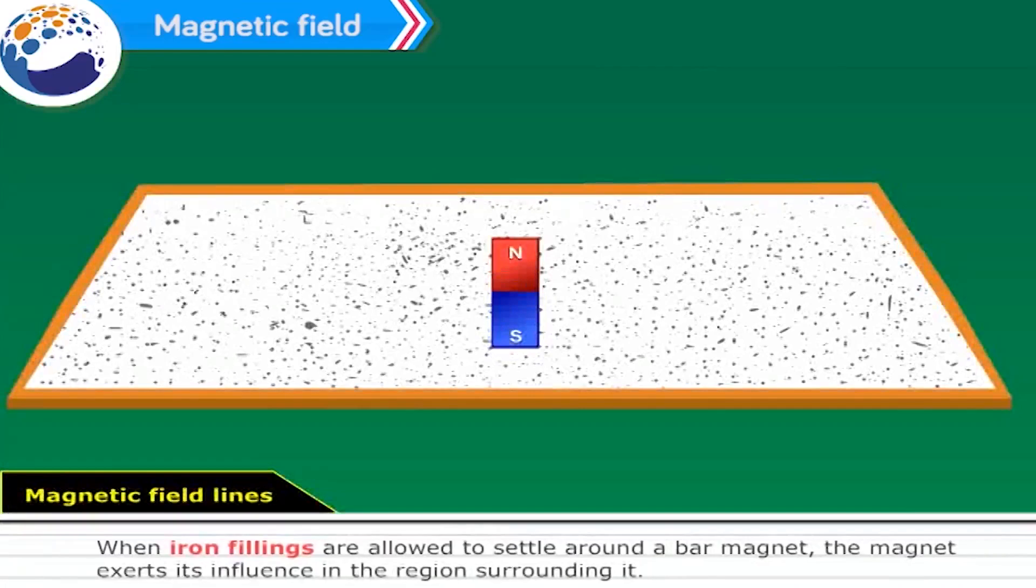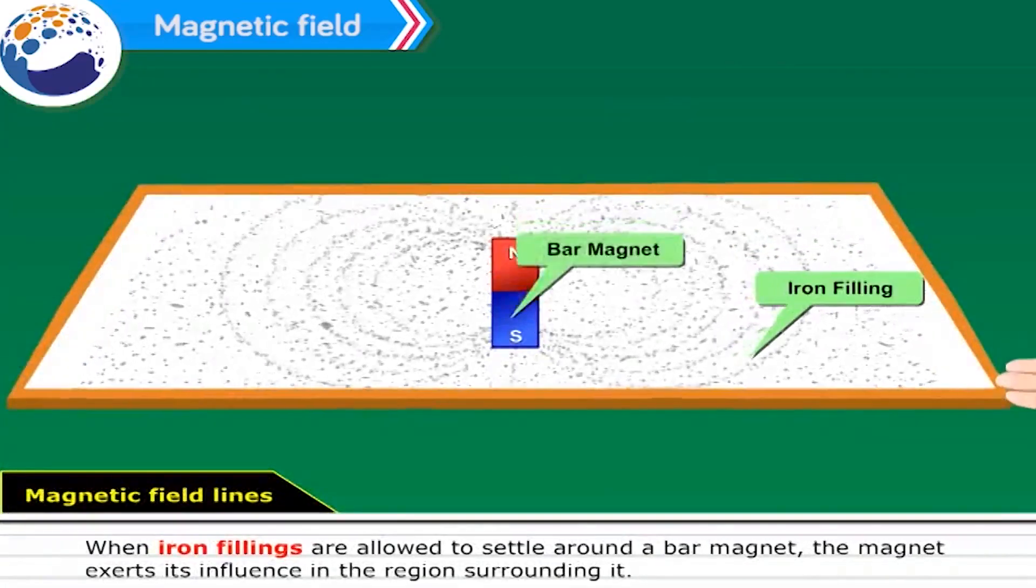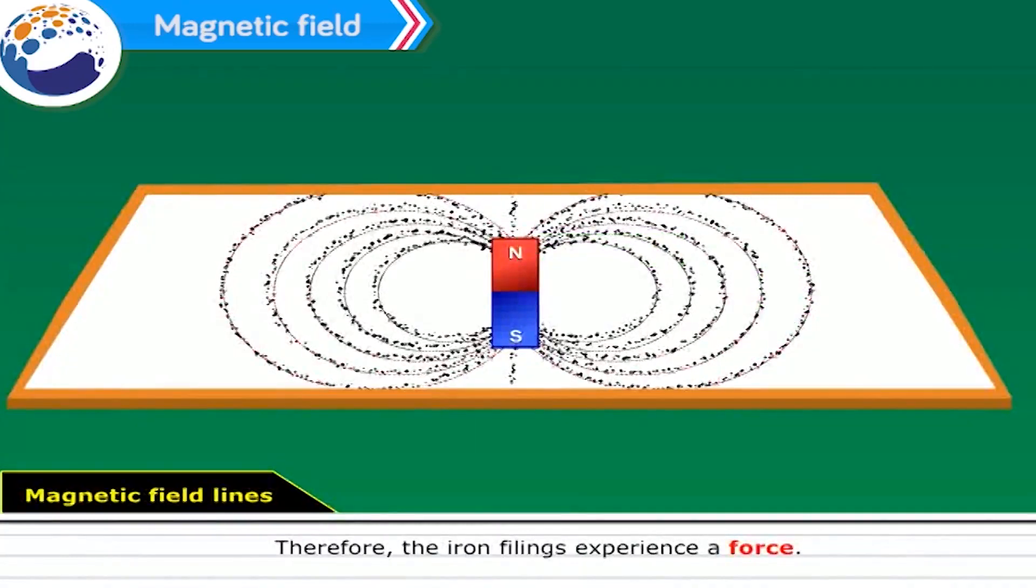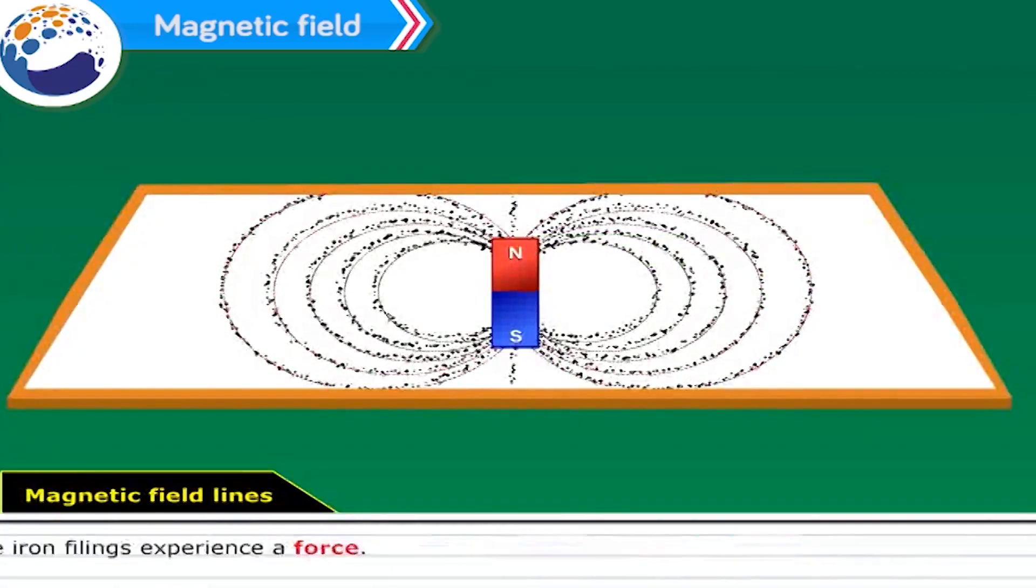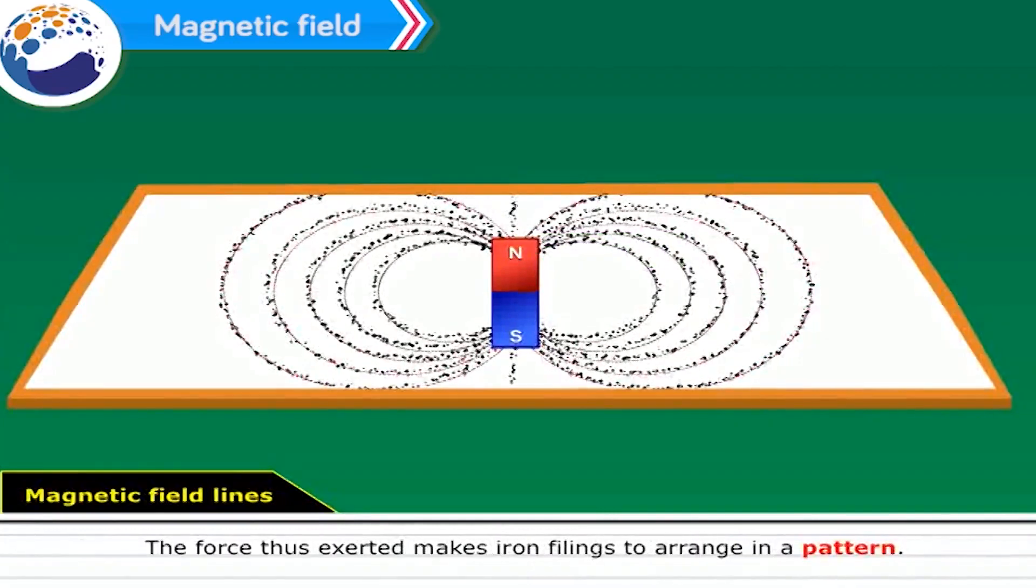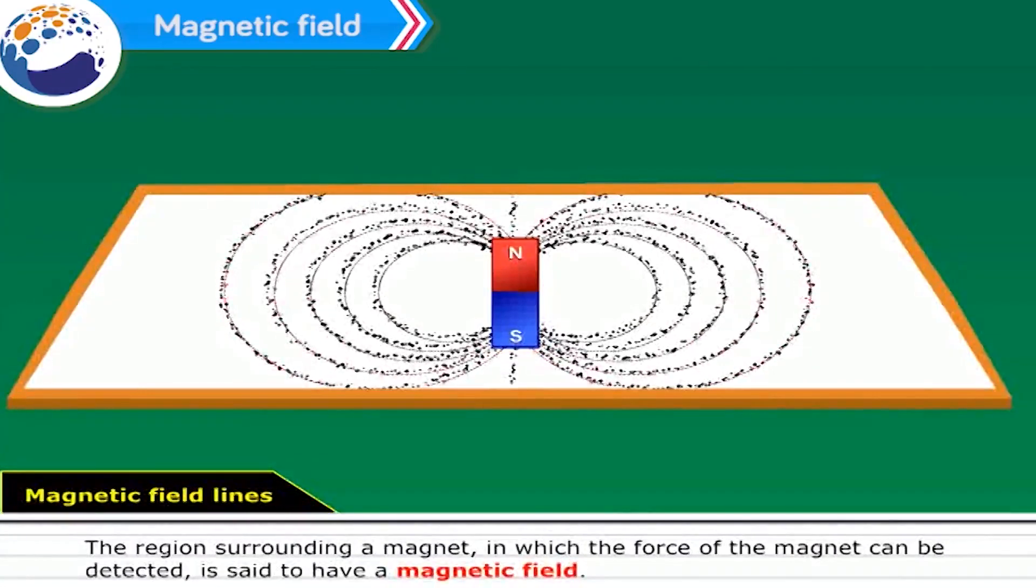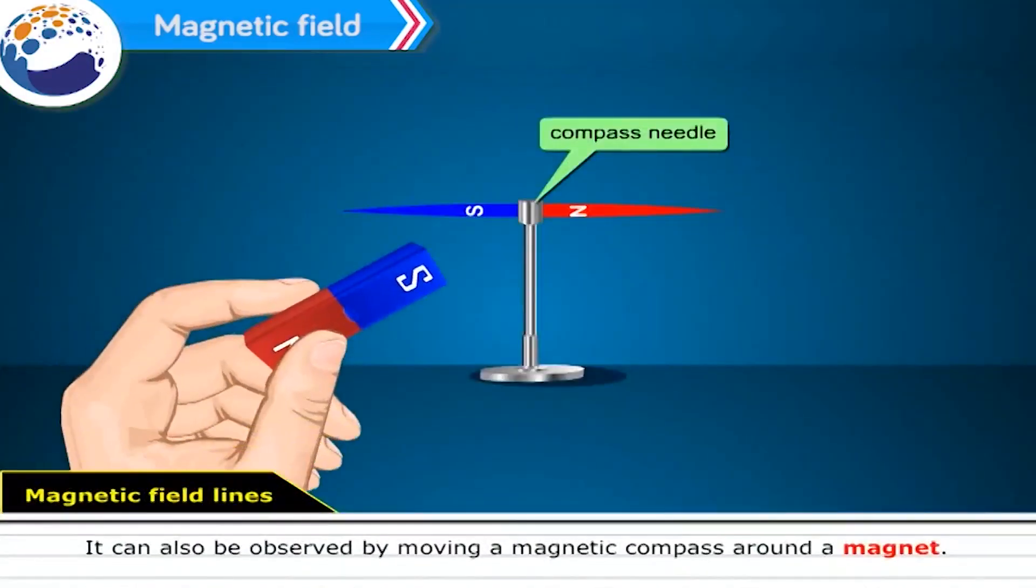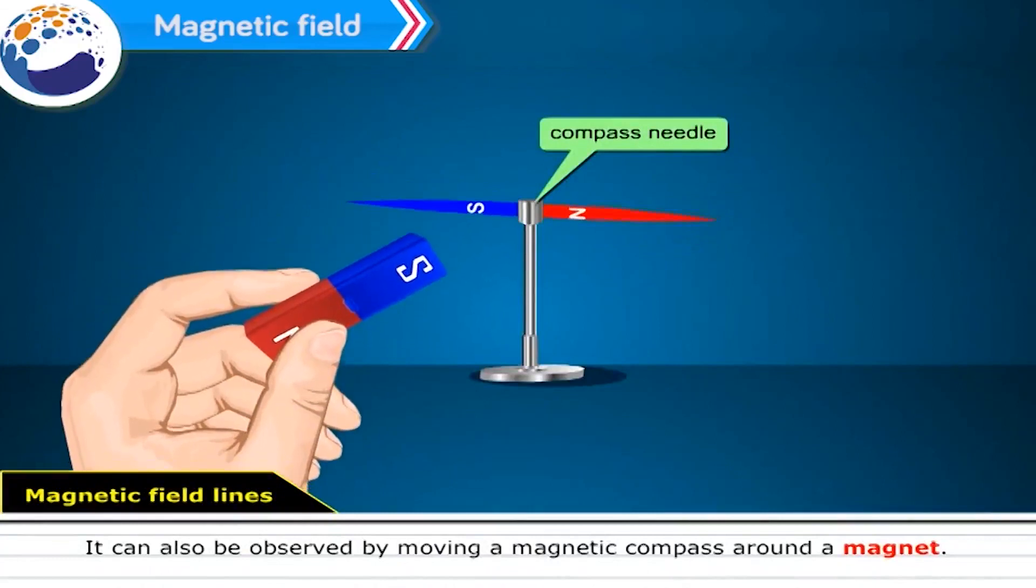When iron filings are allowed to settle around a bar magnet, the magnet exerts its influence in the region surrounding it. Therefore, the iron filings experience a force. The force thus exerted makes iron filings to arrange in a pattern. The region surrounding a magnet in which the force of the magnet can be detected is said to have a magnetic field. The lines along which the iron filings align themselves represent magnetic field lines. It can also be observed by moving a magnetic compass around a magnet.